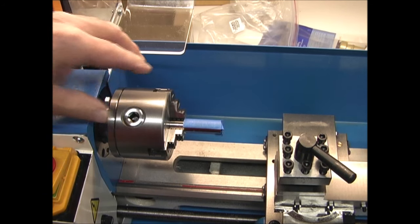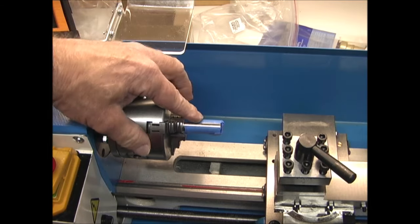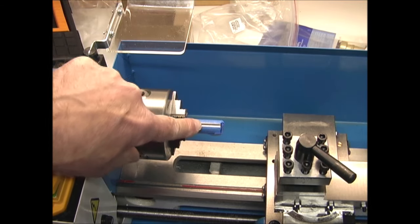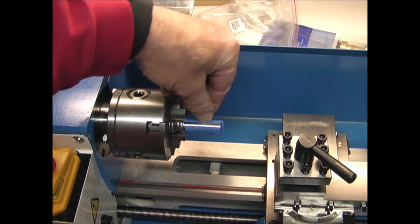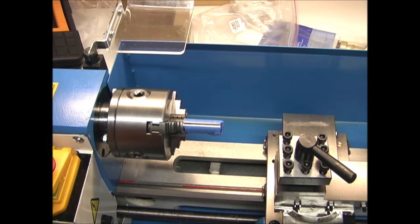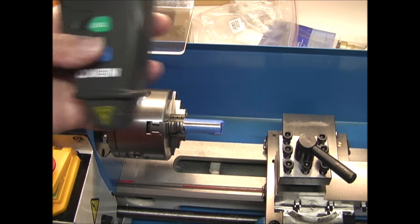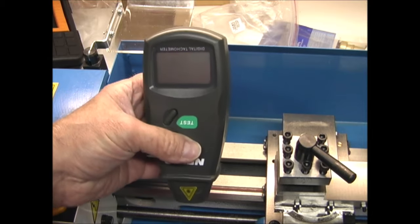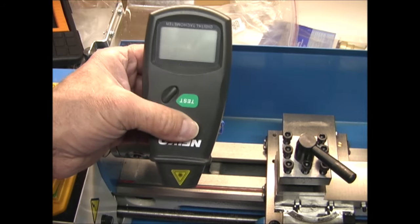Next I want to check the actual RPM. I put some tape on this shaft just leaving a shiny spot right here so that I can use my tachometer to check the RPM.